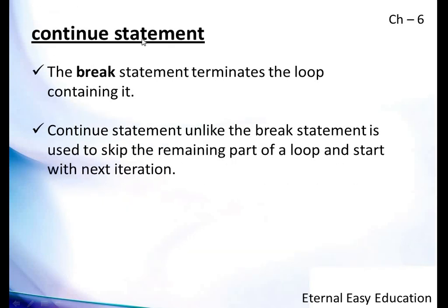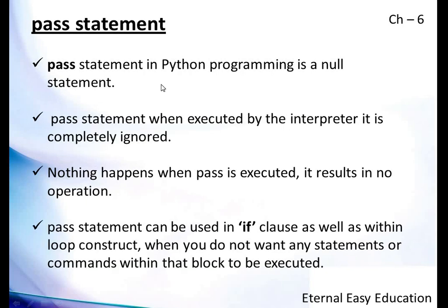Break terminates the loop. Continue skips the remaining part of the loop and starts with the next iteration — it will not terminate, just skip the remaining part and start the next iteration. You will understand better when you see the example. Pass is a null statement; when executed by the interpreter it is completely ignored.